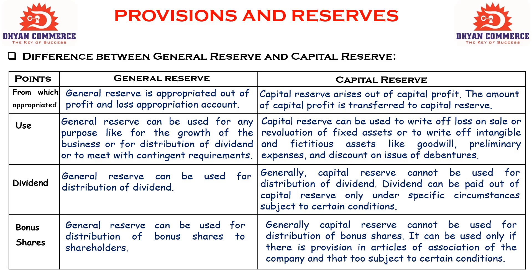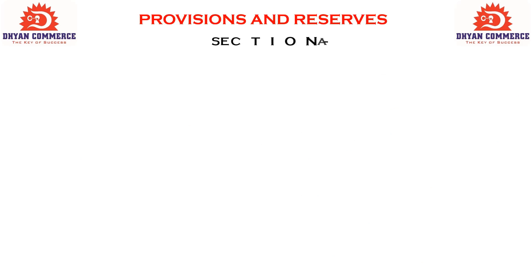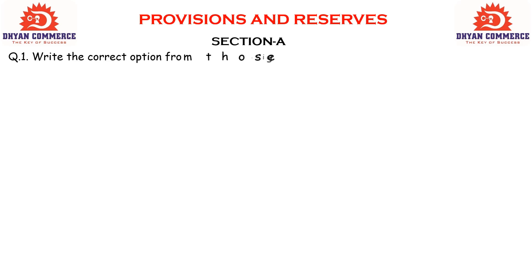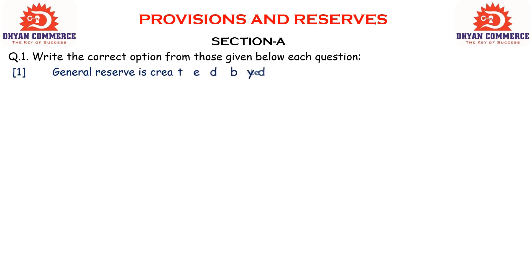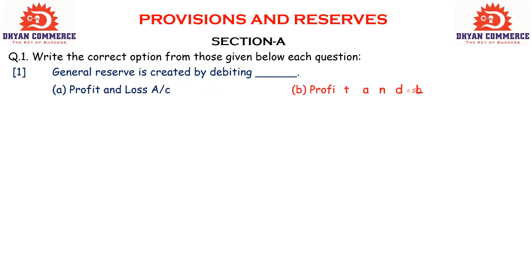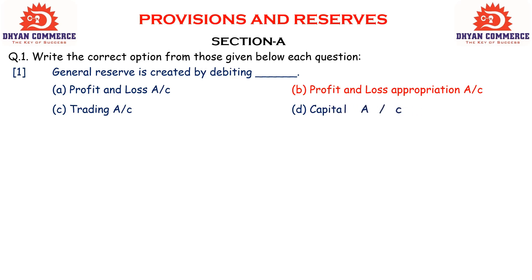Har slide ko bacho video pause karke photo khich lo ya note down karo. Next, bacho short questions aur MCQ karne ja rahe hain. Section A — MCQ, Multiple Choice Questions. Write the correct option from those given below each question. First question: General reserve is created by debiting blank. Answer is B — it is created out of Profit and Loss Appropriation Account.